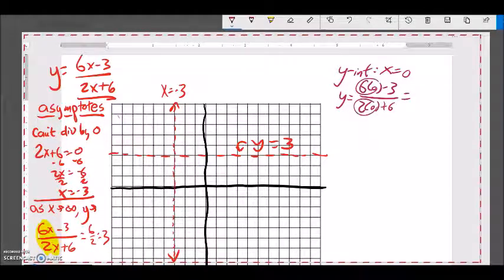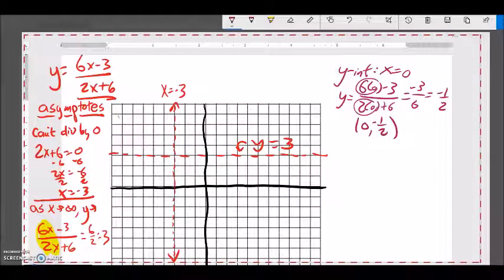So I end up with negative 3 over 6, which is negative 1 half. So when x is 0, y is negative 1 half. So that is about here. Let me label that point (0, negative 1 half). So there's my y-intercept.